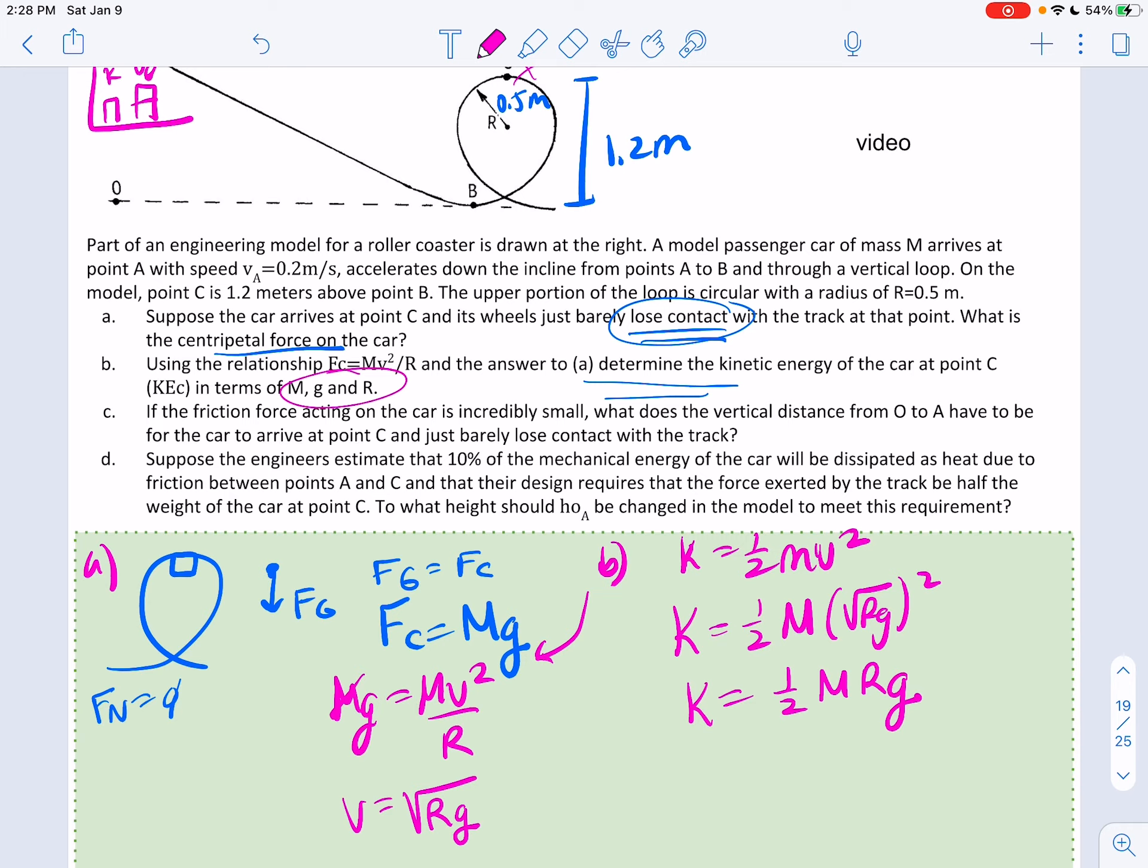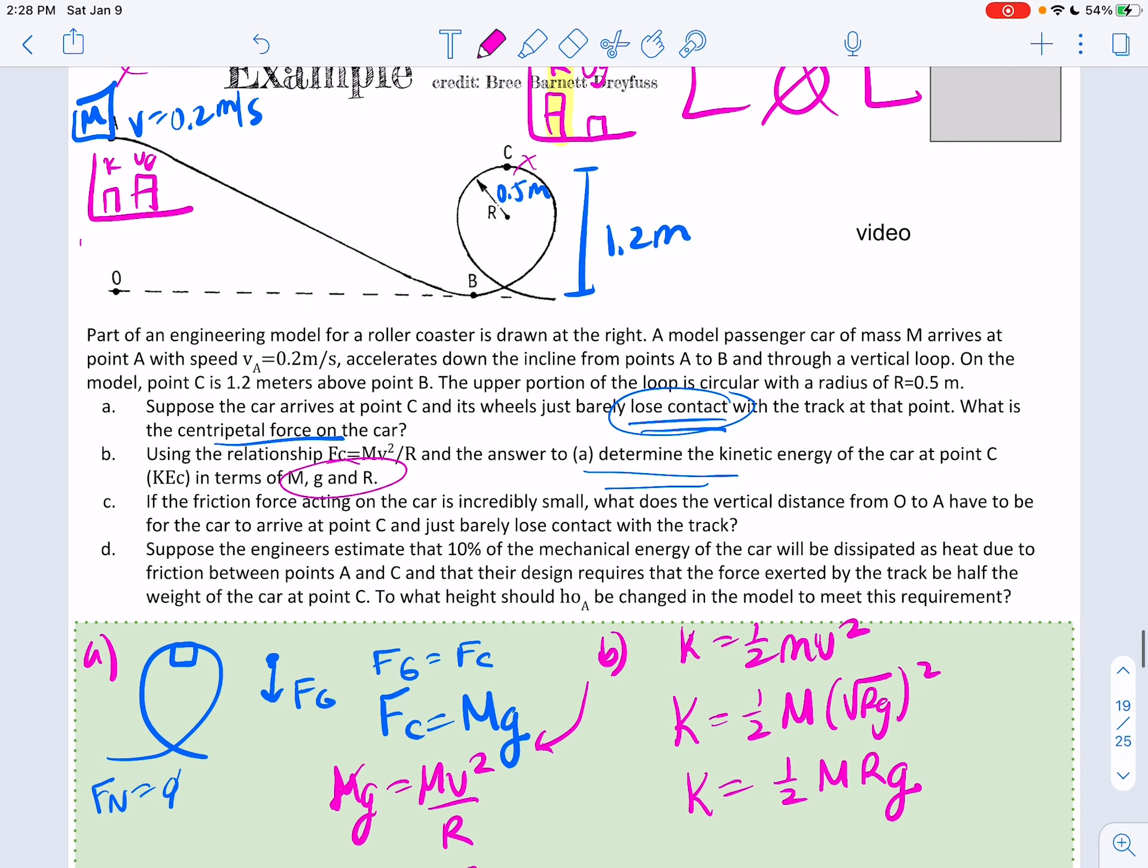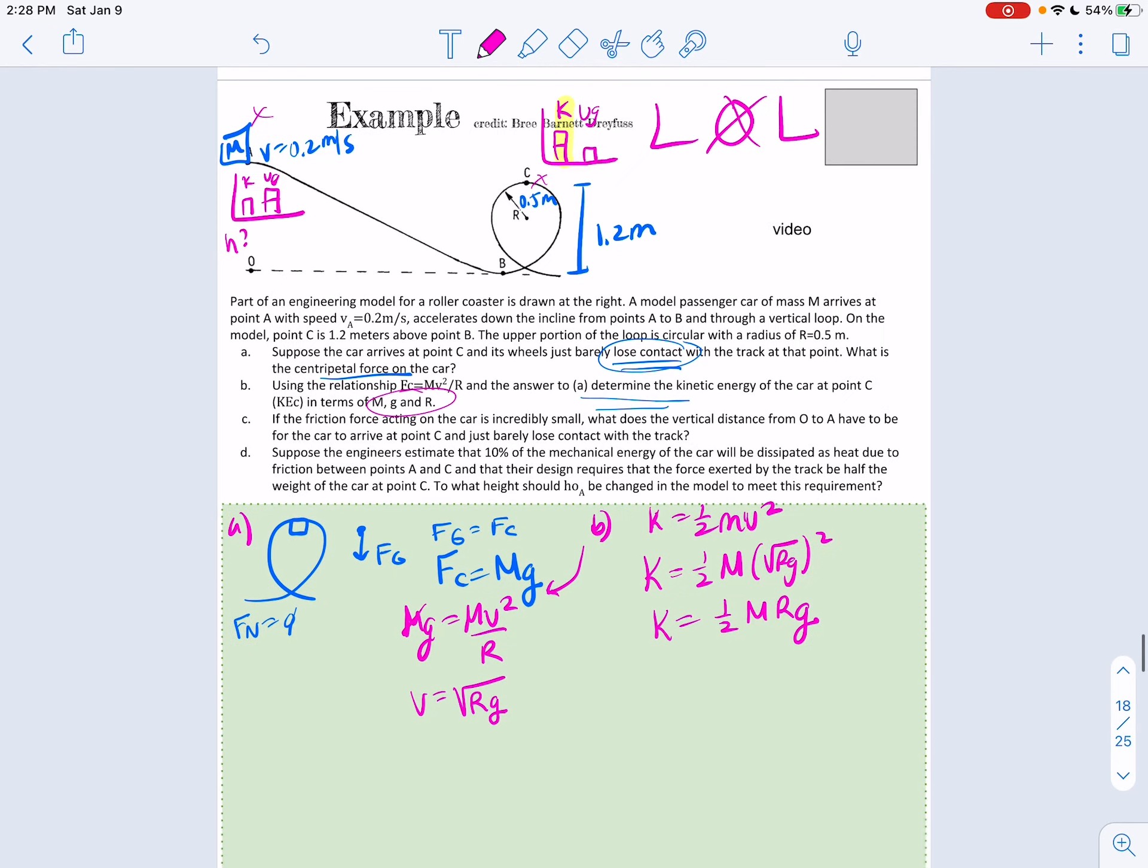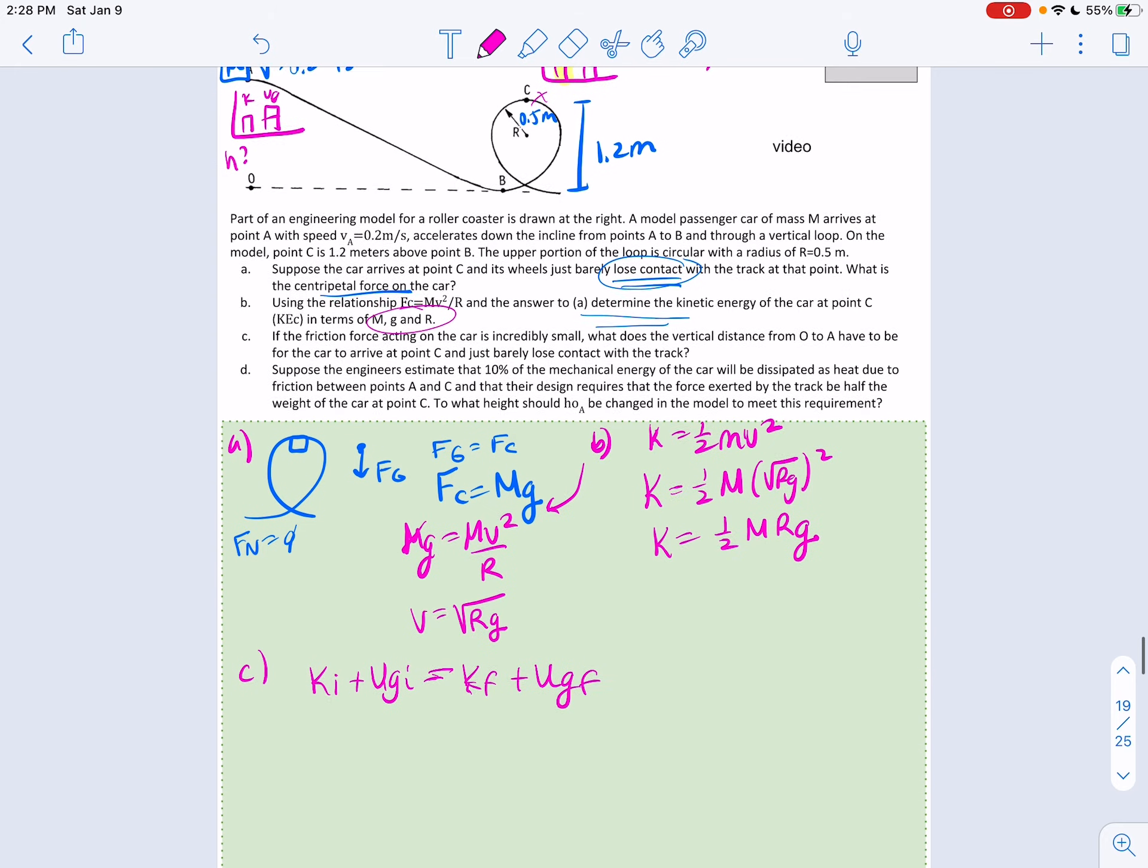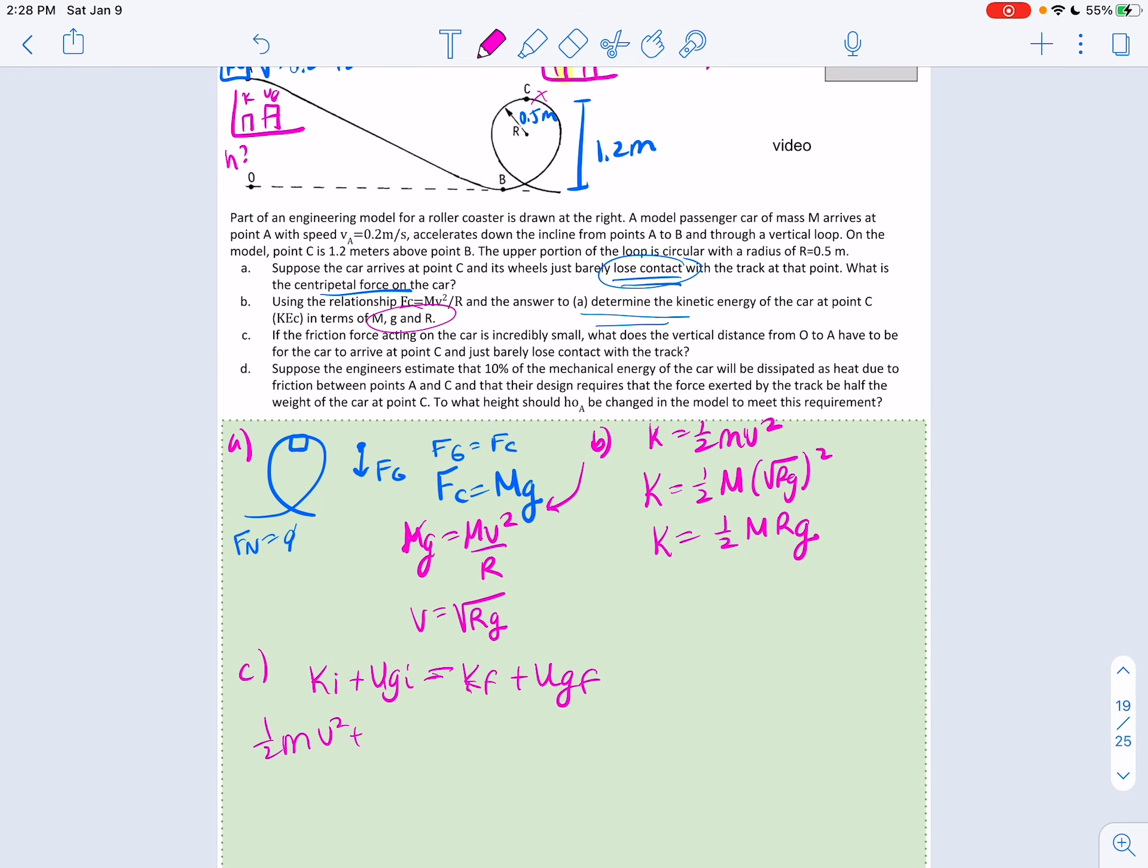If the friction force acting on the car is incredibly small, which means we're not going to worry about thermal energy, what does the vertical distance from O to A have to be so that this happens? So we're basically looking for the height here. So now we want to use our conservation of energy equation. So we'll have the initial kinetic and gravitational energies equal the final kinetic and gravitational energies.